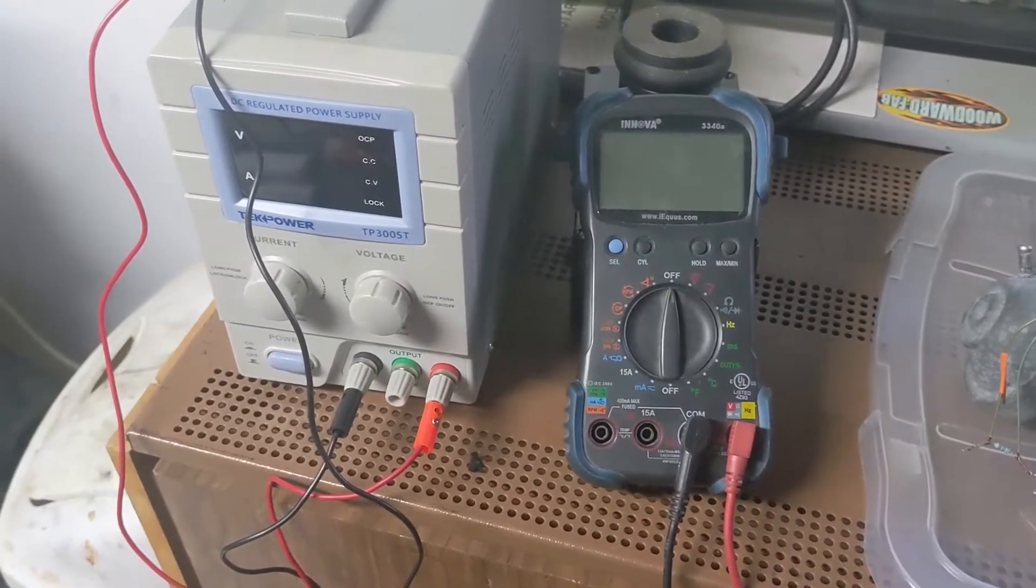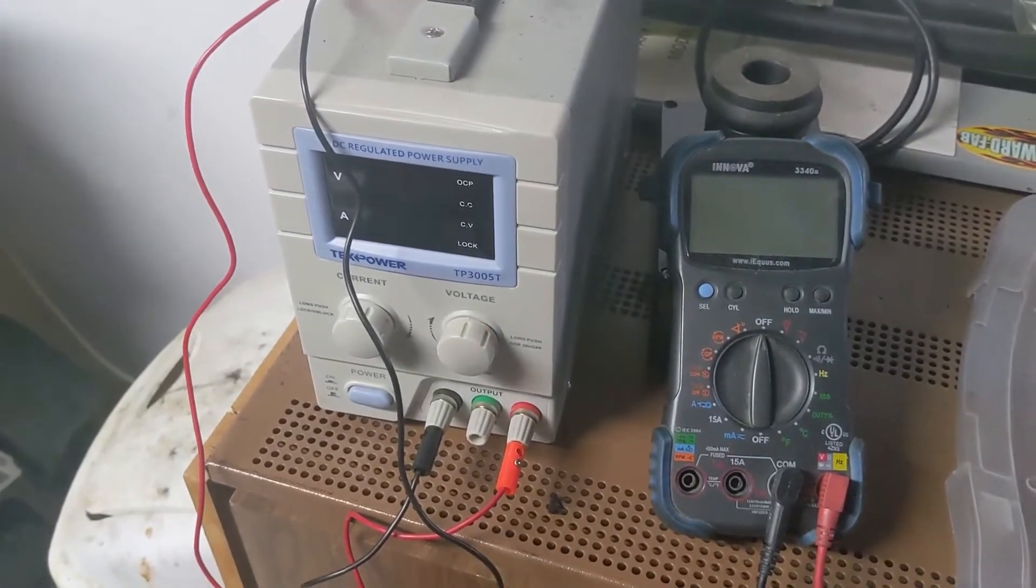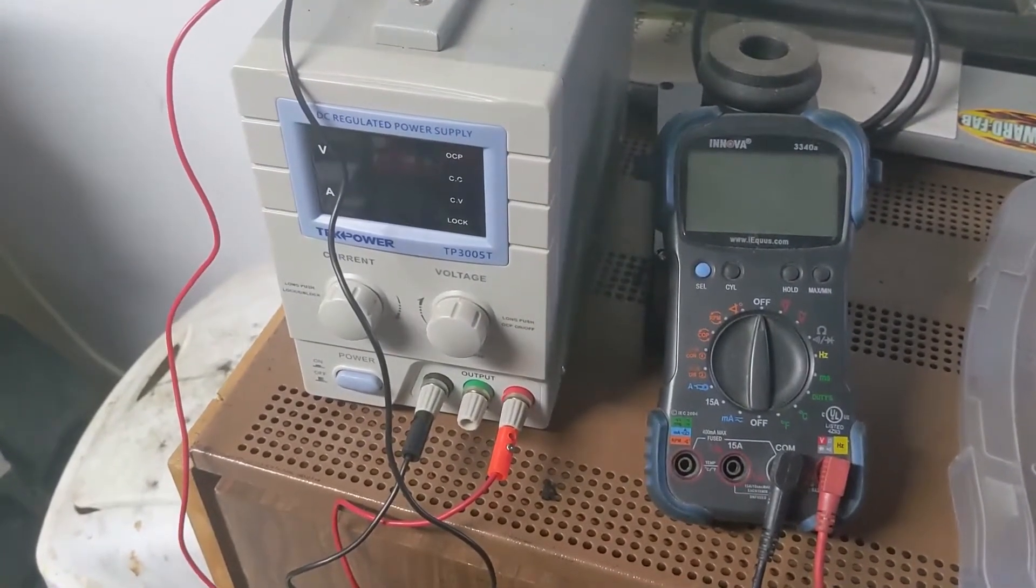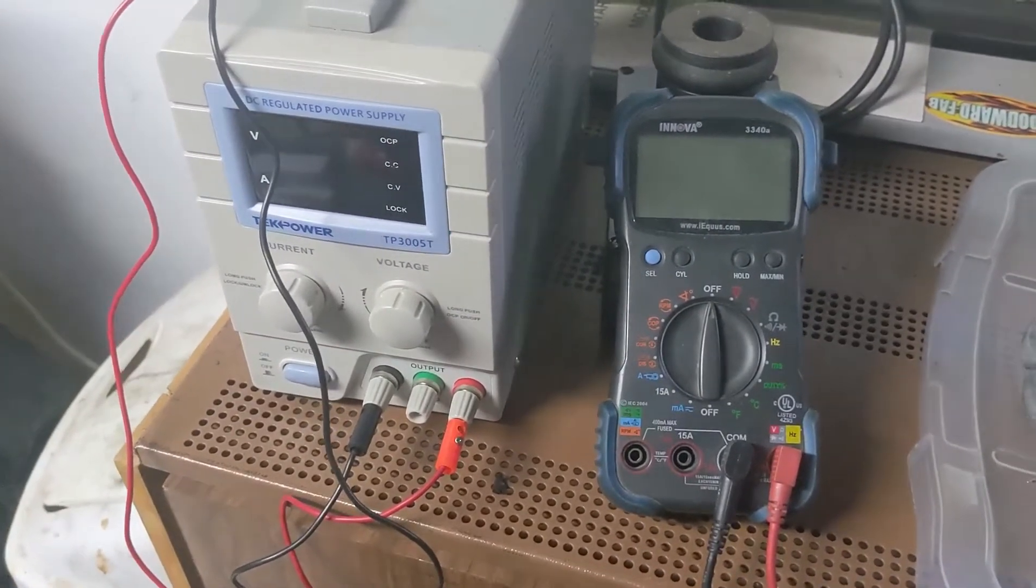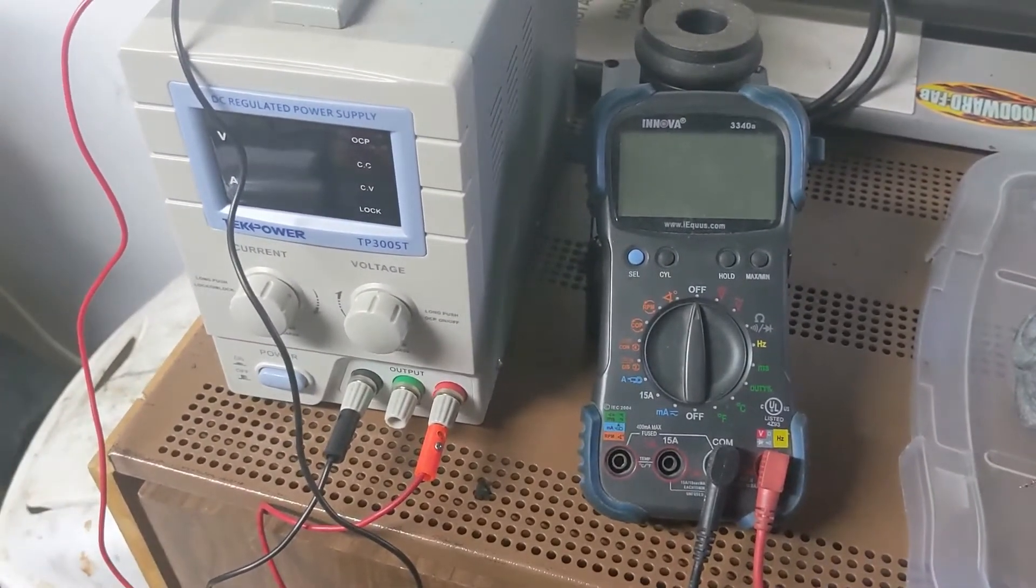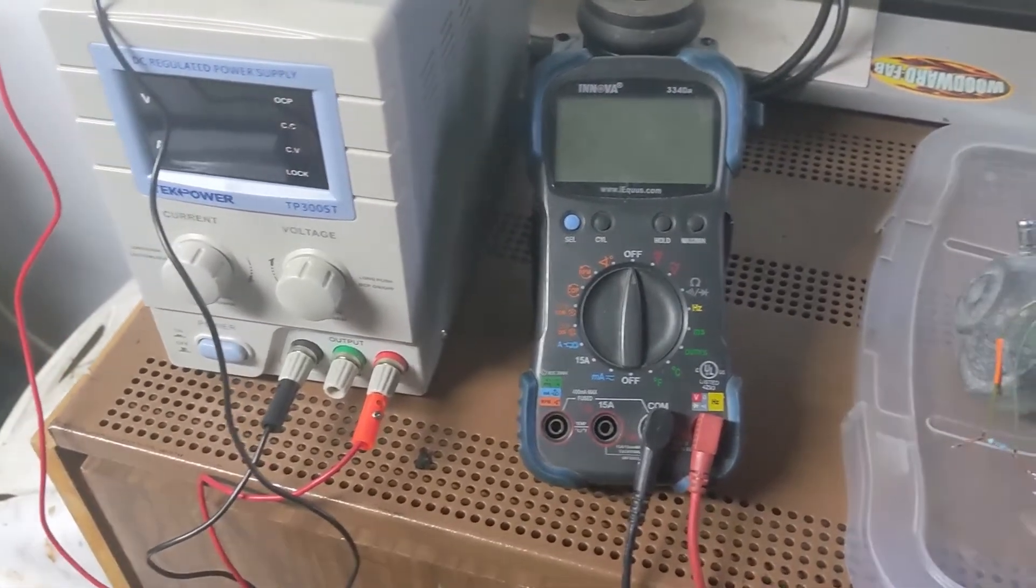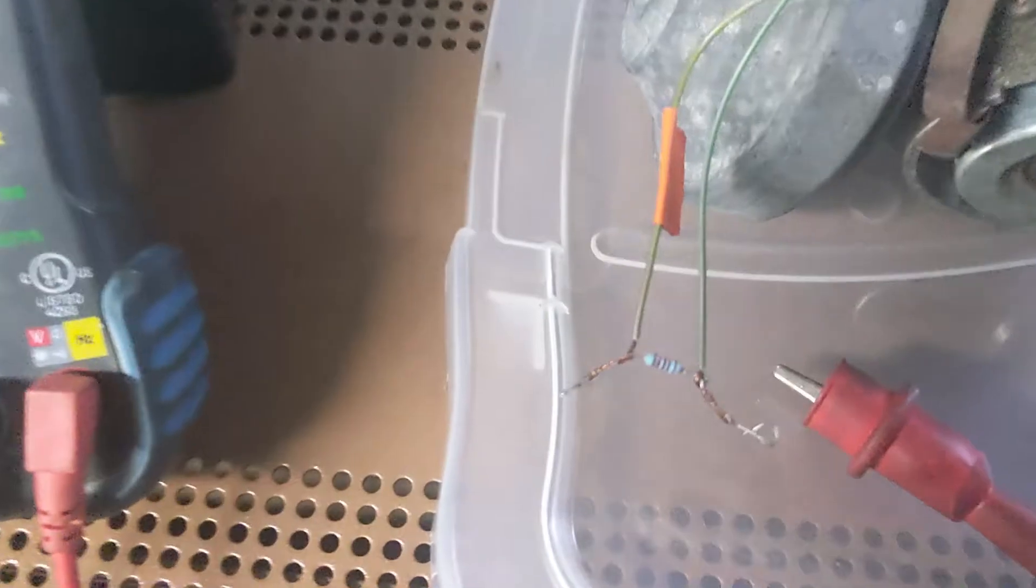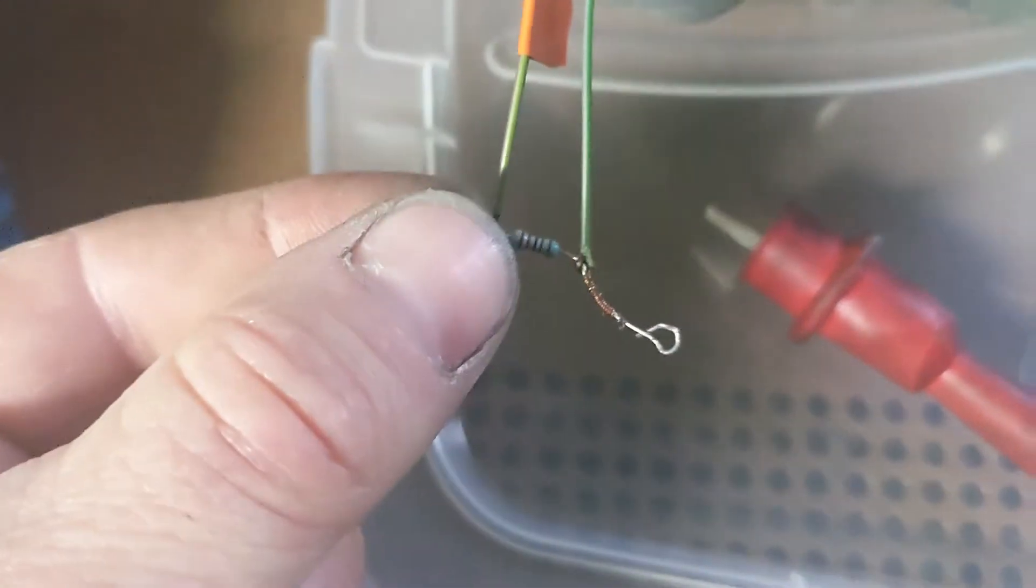This time, we're going to start with the same basic tools, a regulated power supply and a digital multimeter. But what we're going to take out of the equation this time is the ignition control module. We're going to test only the Hall sensor itself, not in combination with the ignition control module. To do that, we need to apply a pull-up resistor to this little test. And you can see that little guy right here.